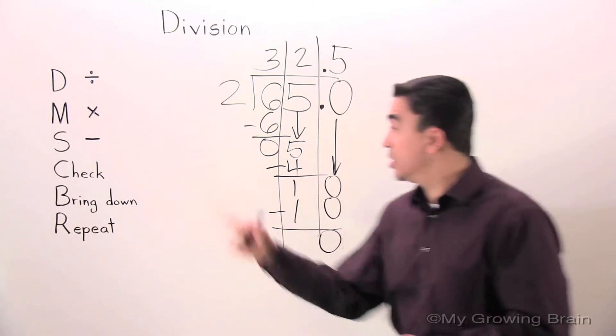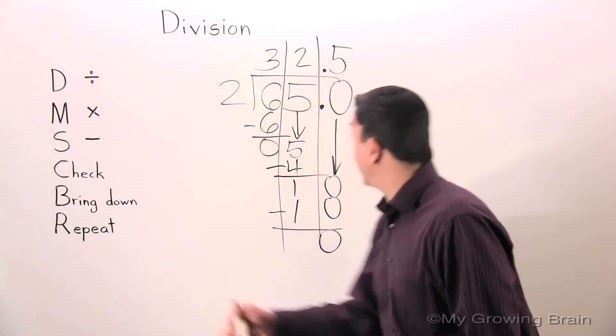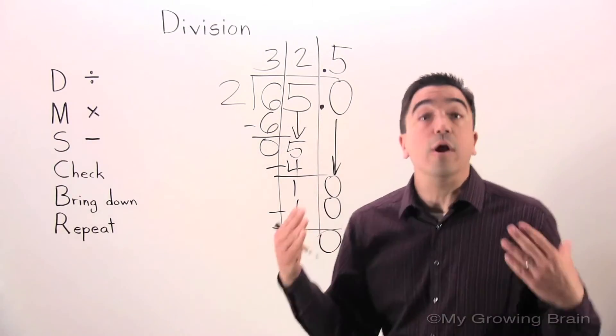Next step, check. 0 less than 2. Keep on going. Next step, bring down. Nothing there. We are done.